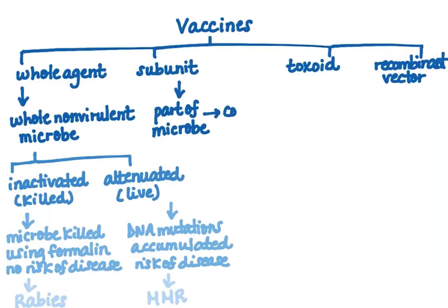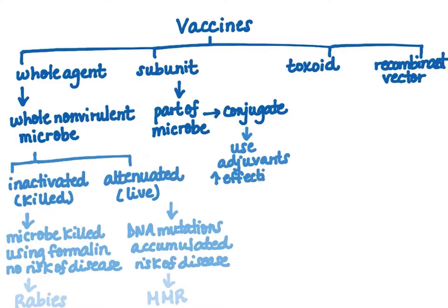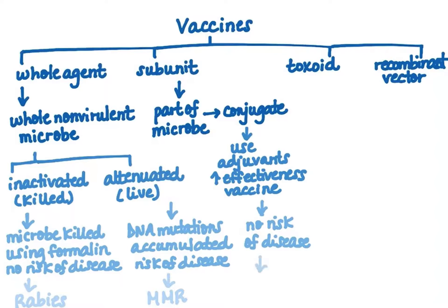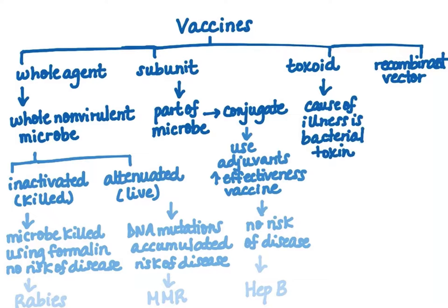Subunit vaccines use only a part of a microbe and are also known as conjugate vaccines. They are specialized vaccines that use adjuvants — additional ingredients that increase the vaccine's effectiveness, which we'll cover in the next slide. This is another form of a completely inactivated, killed vaccine, using only part of a microbe rather than the whole organism, so there is no risk of contracting the disease. A common example is the hepatitis B vaccine.